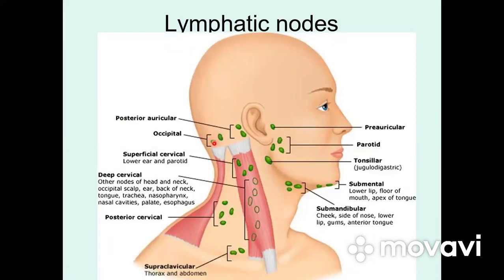The occipital lymphatic nodes — most often we have from one to six — are located at the level of where the sternocleidomastoid muscle begins. They receive lymph from the skin and deep tissue of the occipital and temporal parts of the head. The parotid lymphatic nodes — most often one superficial and four deep — include preauricular and postauricular lymphatic nodes. Efferent vessels continue to the superficial and deep lateral cervical lymphatic nodes.